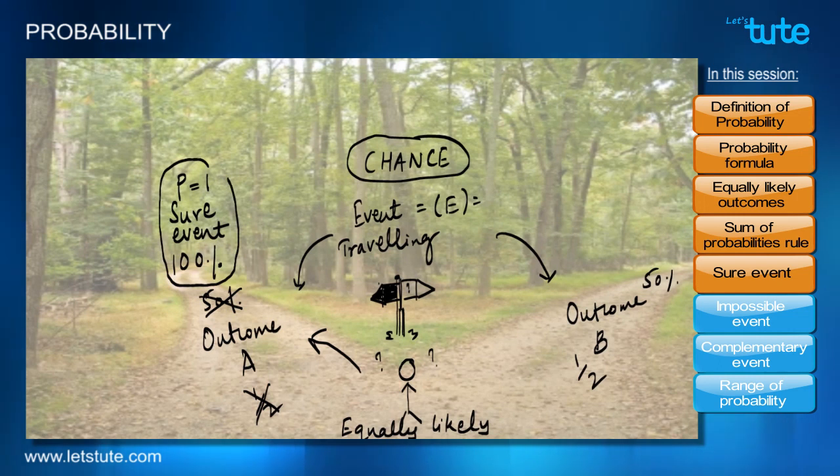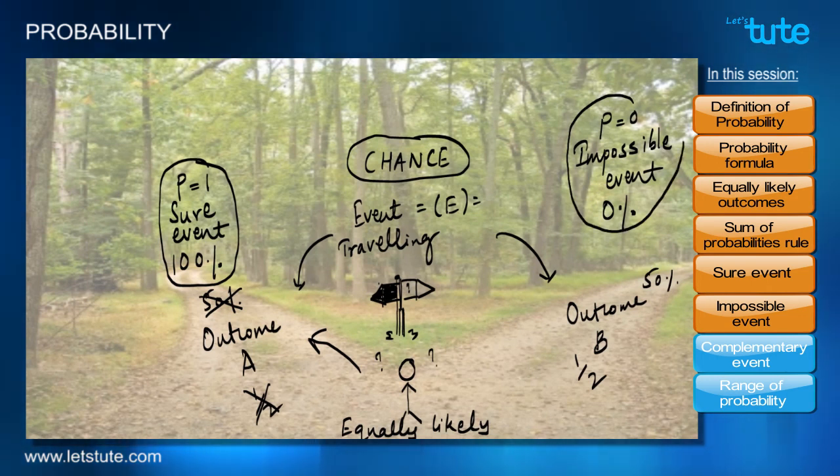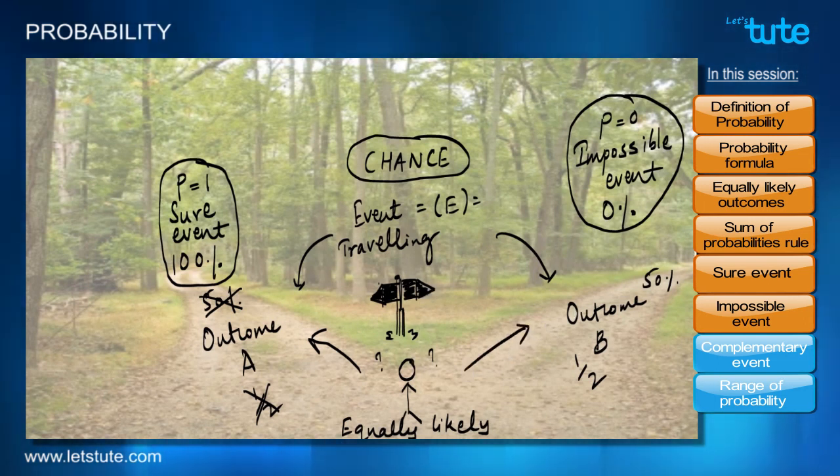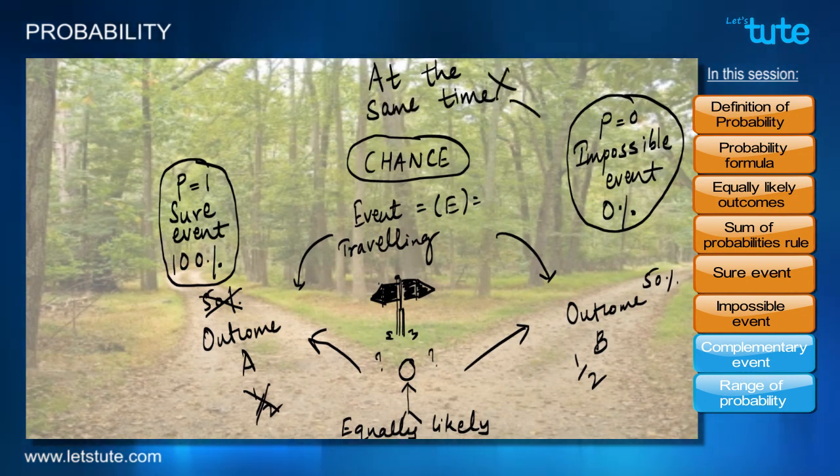Having said that, if there is a sure event, can we say that there is an impossible event also where the chance of anything happening is 0% and the probability is 0? So this is going to be a lower limit. Can such event exist? If we say that the direction indicates that we can take either of the two roads, both the roads are good enough, but I can do it by only taking one road at a time, this means I cannot take both the roads at the same time. So that is what is the impossible event.